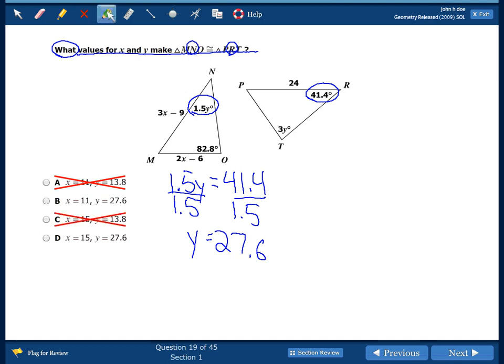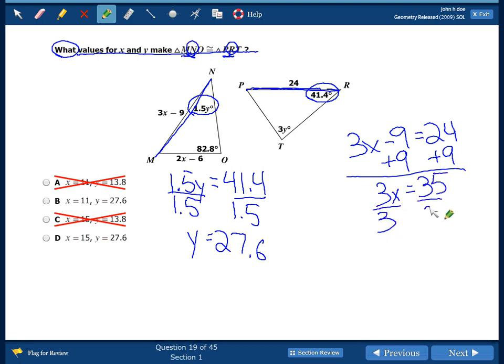And now we need to solve for X. So X comes on side NM. NM matches up with PR. So that would be this side right here. So we do 3X minus 9 is equal to 24. We add 9. We get 33. And we divide by 3. Sorry, this is 33. So we get X is equal to 11. So the correct answer is B.